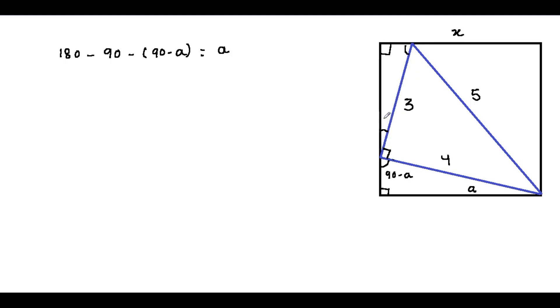So here this is a and this is 90 minus a. We can see that the corresponding angles of these two triangles are equal, therefore these two triangles are similar.